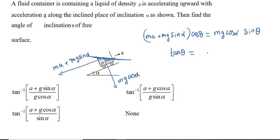So tan theta will be a plus g sin alpha divided by g cos alpha.